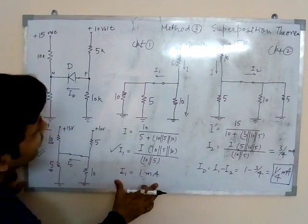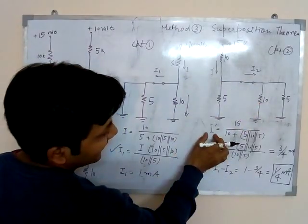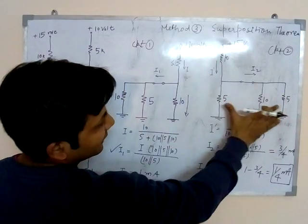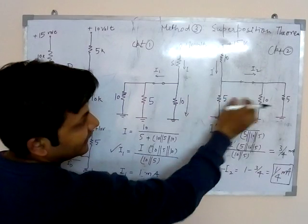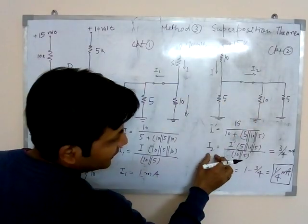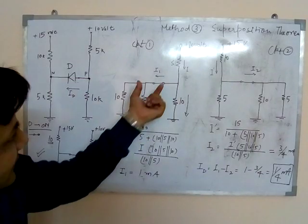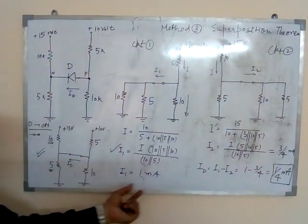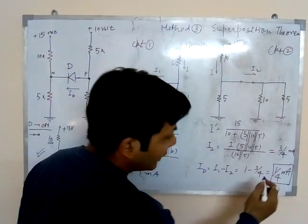The same thing I will do for circuit 2. Circuit 2 I will find out I dash. I dash is 15 divided by total equivalent. 10 plus all 3 are parallel. So this is I dash and I2 is again the current divider rule. This I2 is 3/4 mA. So finally, algebraic sum of I1 and I2 will be I1 minus I2, and that is the diode current. Id = I1 minus I2 = 1 minus 3/4 equals 1/4 mA.